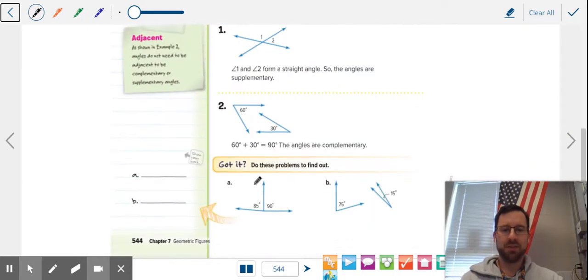Okay, so if you come down here, take a look, we're at 544. If you add these two angles up, you get 175. 175 is not 90, it's not 180. So this would be neither complementary nor supplementary.